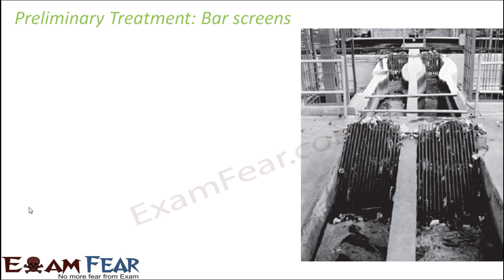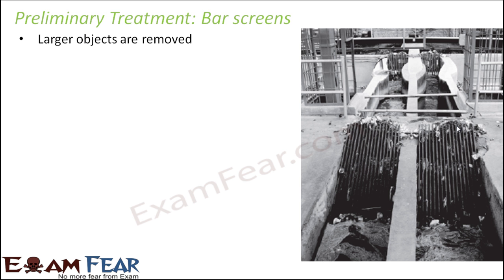First, let us talk about preliminary treatment — specifically bar screens. The entire sewage, which contains dust, dirt, harmful chemicals, solid particles, and everything else, is passed through a device with rod-like bar structures. When sewage passes through these bars, all larger solid particles get stuck and are filtered out. Tiny particles will pass through, but bigger particles get caught. This step is for removing larger objects.